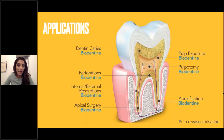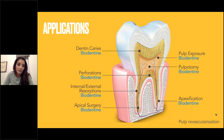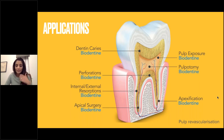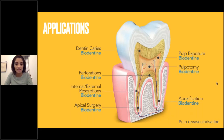Moving on to the applications of Biodentine — it can be used for many things: replacement of tooth tissue such as dentine removed by caries, perforation repairs, repair of resorption, retrofilling during apical surgery, mending pulp exposures, pulpotomy procedures, and apexification and revascularization. I'll be going into more detail about some of these procedures.